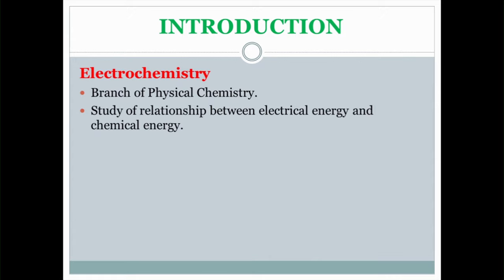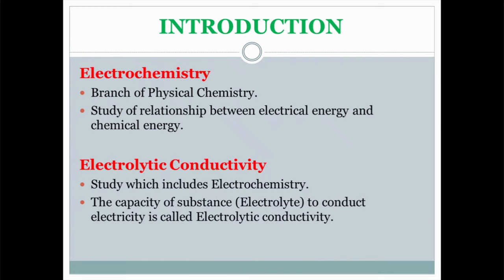Now let's go for the introduction of this chapter. Electrochemistry is a branch of physical chemistry which deals with the study of the relationship between electrical energy and chemical energy. Electrolytic conductivity is a study which includes electrochemistry, and it is defined as the capacity of a substance — that is, an electrolyte — to conduct electricity.